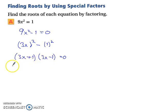So, now we can simply solve for x. So, we have 3x plus 1 has to equal 0, which means x is negative 1 third. And we have 3x minus 1 has to equal 0. And that would end up being x equals positive 1 third.